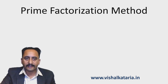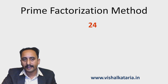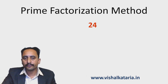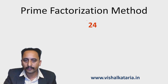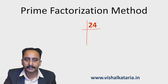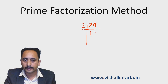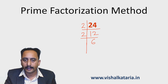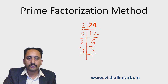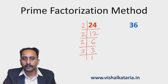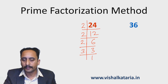Again I will take the example with numbers 24 and 36. First I'll find the prime factors of 24. Using the ladder or division method: 2 × 12 = 24, then 2 × 6 = 12, then 2 × 3 = 6, and 3 is prime. So the prime factorization of 24 is 2 × 2 × 2 × 3.